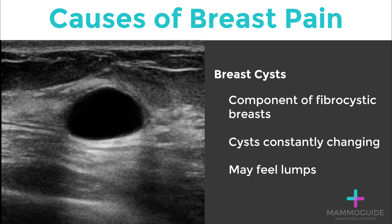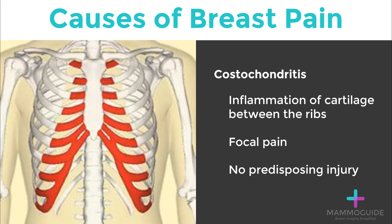There may be an underlying palpable lump. Costochondritis is a difficult to diagnose but fairly common condition involving inflammation of the cartilage between the ribs. It tends to cause focal pain, and typically there is no predisposing injury.